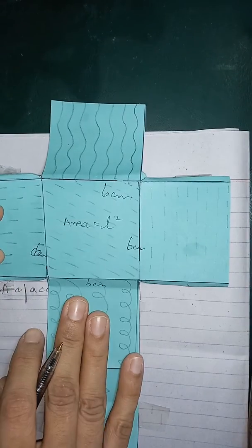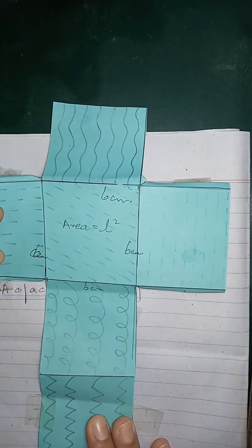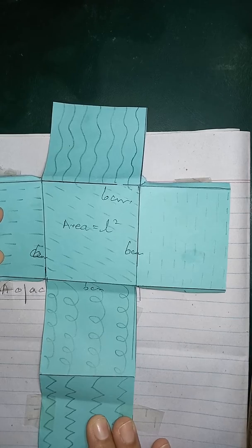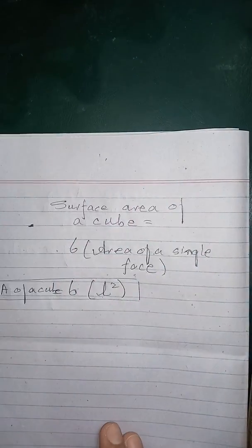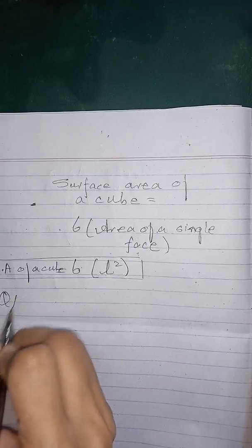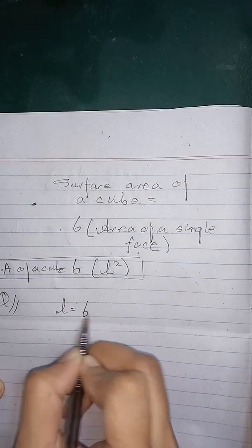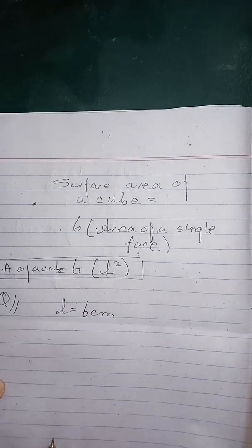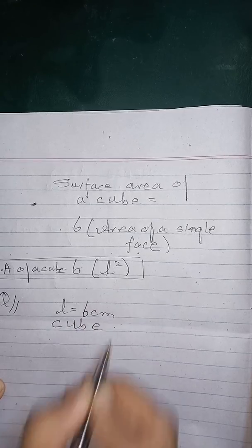For example, if you need to find out the surface area of this cube as well as the volume of this cube having L is equal to 6 cm, and the given shape is cube.